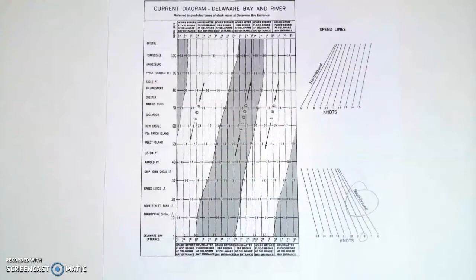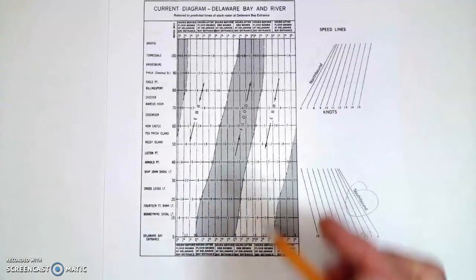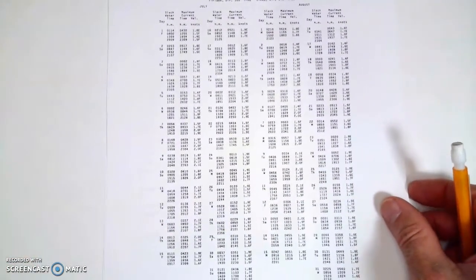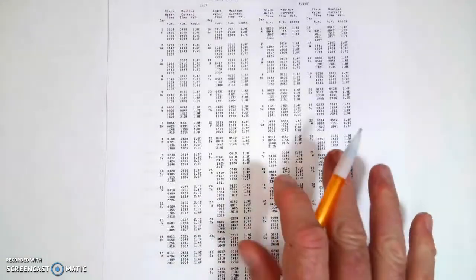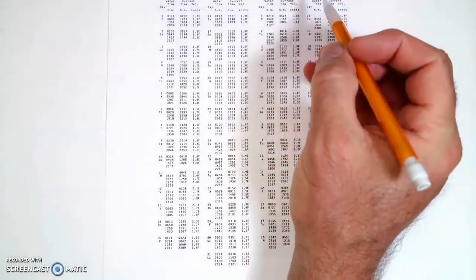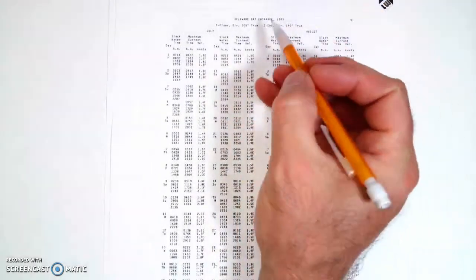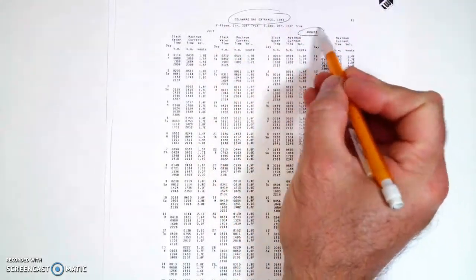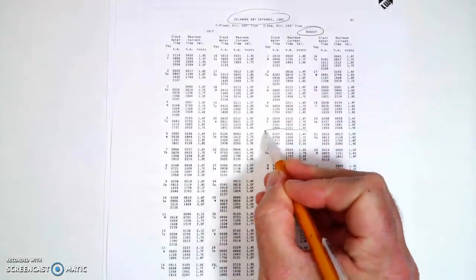I'm going to go to, this is off of Delaware. This whole chart is off of Delaware, the reference station. Delaware starts on page 58 of the 1983 book. I just happen to have a photocopy of that particular page. Here is Delaware Bay. It's August, and here is the 6th.